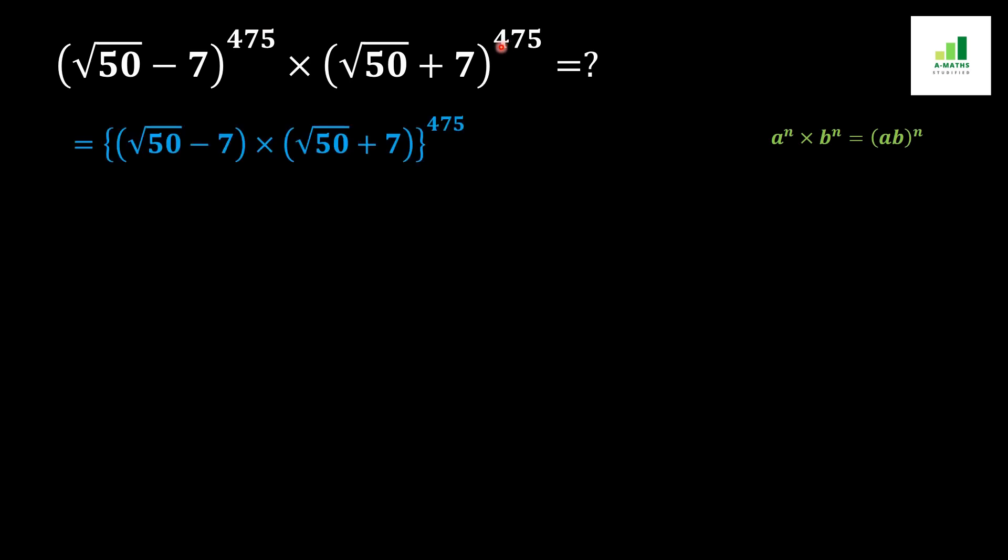After applying this rule, we should get (√50 - 7) × (√50 + 7) to the power 475. Now in the next step, we will apply the a² - b² formula to compact this value.